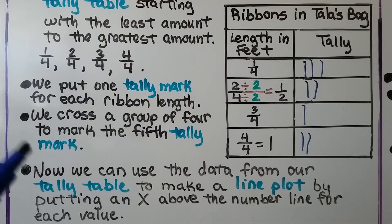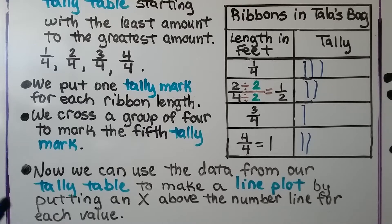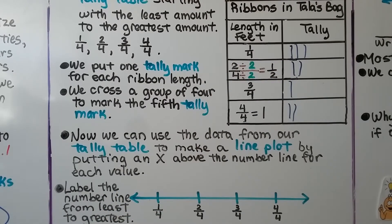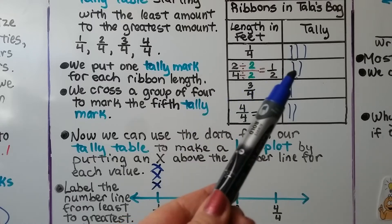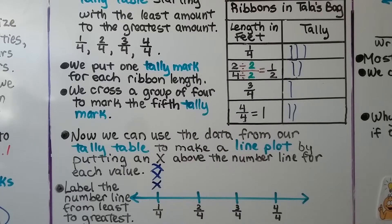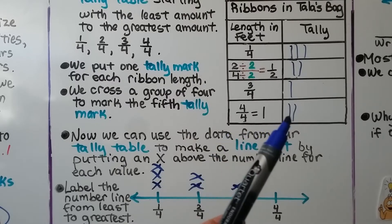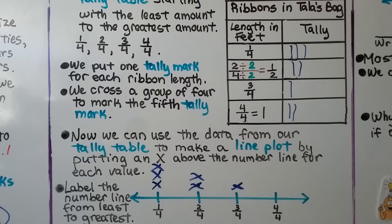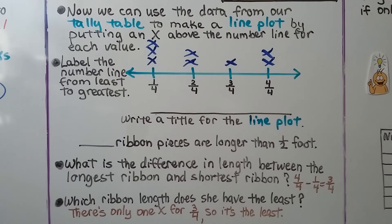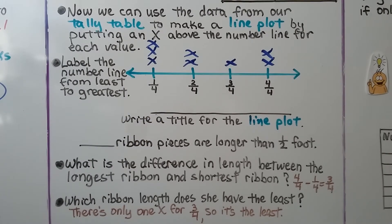Now we can use the data from our tally table to make a line plot by putting an X above a number line for each value. One-fourth has three tally marks, so we put three X's above the one-fourth. Two-fourths has two tally marks, so we put two X's. Three-fourths only has one, so we put one X. Four-fourths has two, so we put two X's above the number line. The number line is labeled from least to greatest, and we can write a title for the line plot — ribbon pieces in feet.